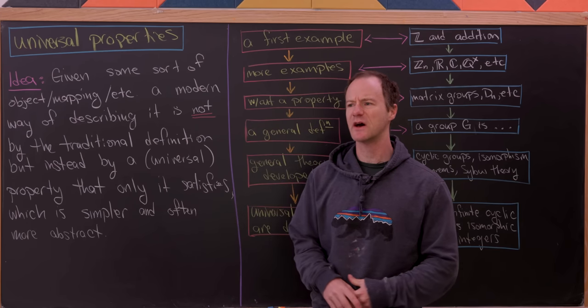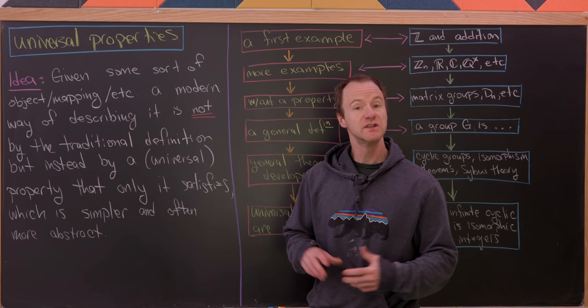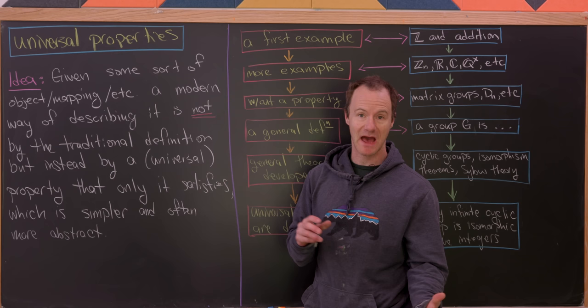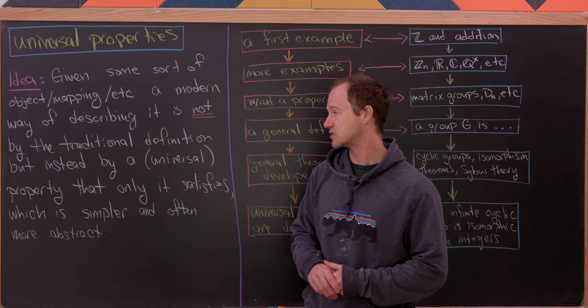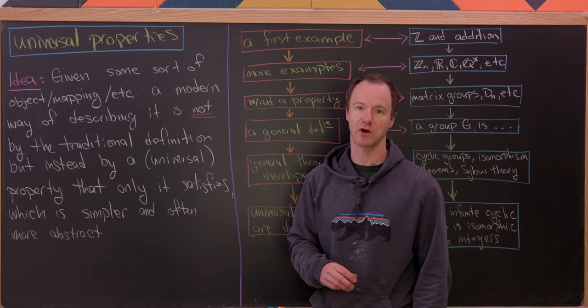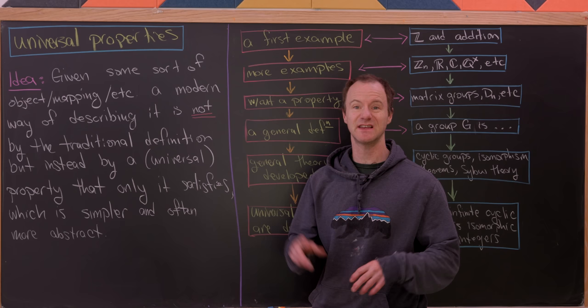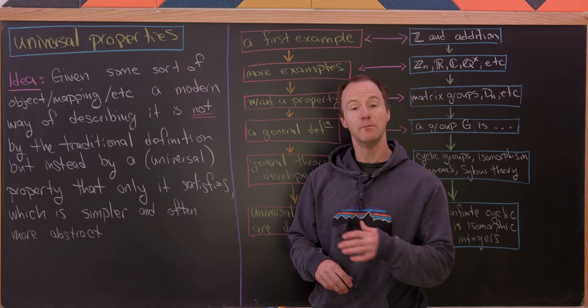Today I want to tell you about a fairly modern addition to mathematics: the idea of a universal property. Given some sort of object, mapping, or what have you, a modern way of describing it is not using the traditional definition but instead by some universal property. The object in question is the only thing that satisfies this universal property. Often this universal property is simpler to state than the traditional definition, yet it's also more abstract. This fits in the natural evolution of mathematics to become more abstract over time, but in the end in more simple terms.